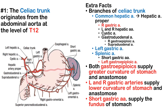You should definitely know the three branches for Step 1. In terms of important branches, you should know that the left gastric artery comes off of the celiac trunk. The right gastric artery, which supplies the right lesser curvature of the stomach, comes off the hepatic artery proper. It's good to distinguish where they're coming from.